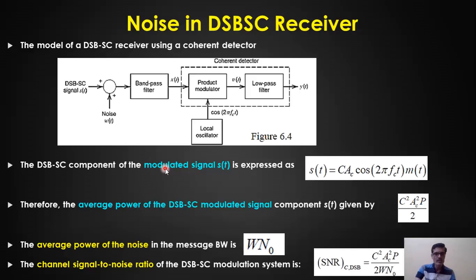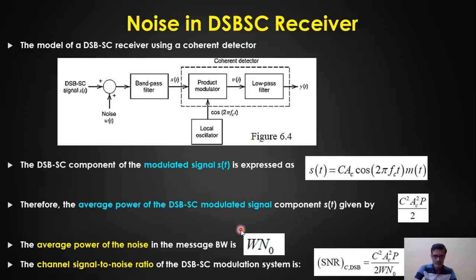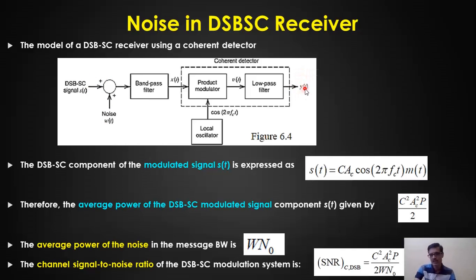The DSB-SC modulated signal is s(t) = Ac·cos(2πfct) × m(t), with a scaling factor c. We need to calculate the average power of s(t) and the average noise power to find the channel SNR, then the output SNR, and finally take their ratio to get the figure of merit.